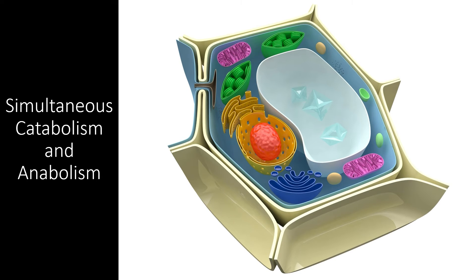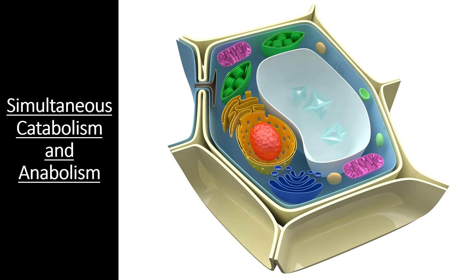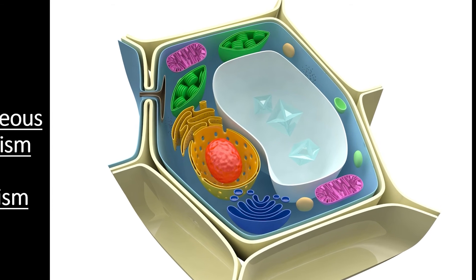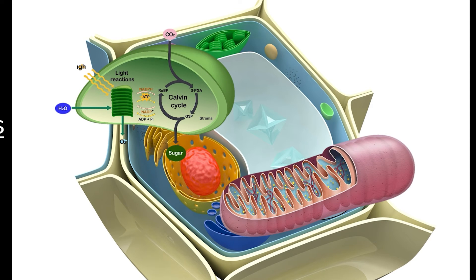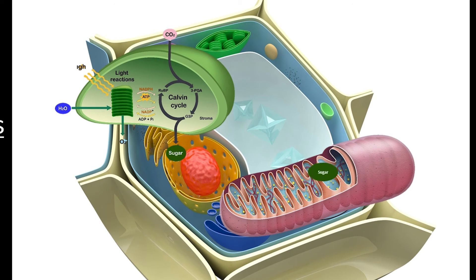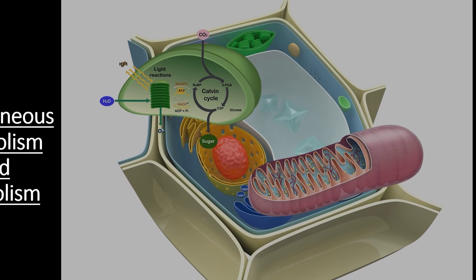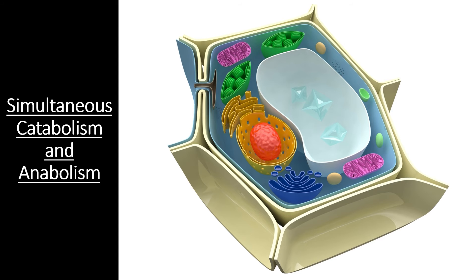The last benefit of compartmentalization is that the reactions of catabolism and anabolism are physically separate, so they can operate simultaneously. The most obvious example happens in a plant cell, where chloroplasts are rapidly creating glucose while the mitochondria are busy breaking glucose down. The chloroplasts are completing an anabolic process, whereas the mitochondria are engaging in a catabolic process. Being separated allows the chloroplast to produce glucose as long as the sun is shining, while the mitochondria can slowly produce ATP for the cell from this glucose, even at night when the sun is no longer shining.